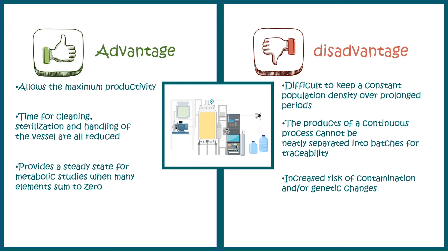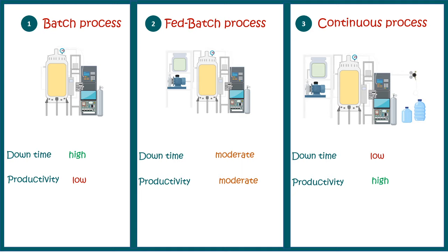To summarize the three processes: in the batch process, productivity is low because downtime is really high, though it is easily manageable. In the fed batch process, both downtime and productivity are moderate — it is an intermediate stage. The continuous process is now adopted in many industries because downtime is low and productivity is high.